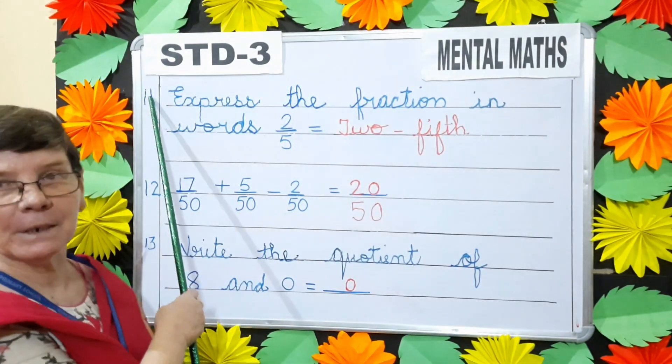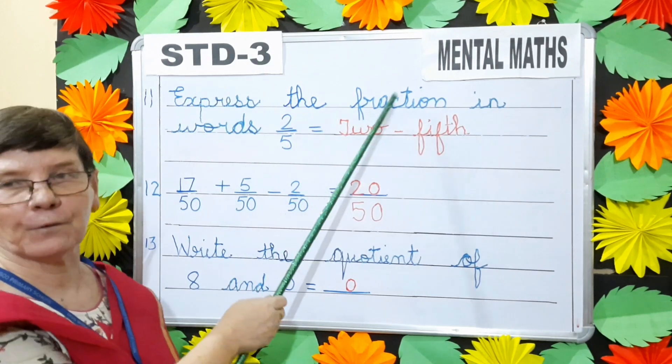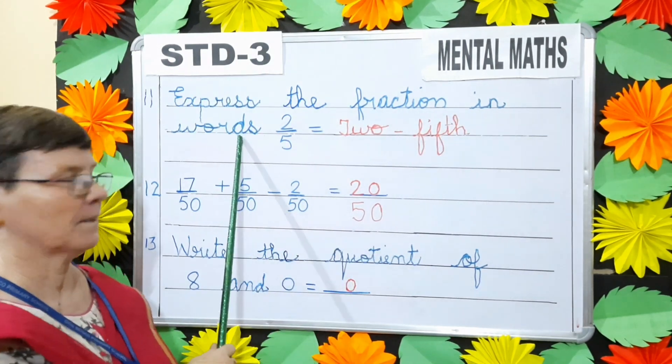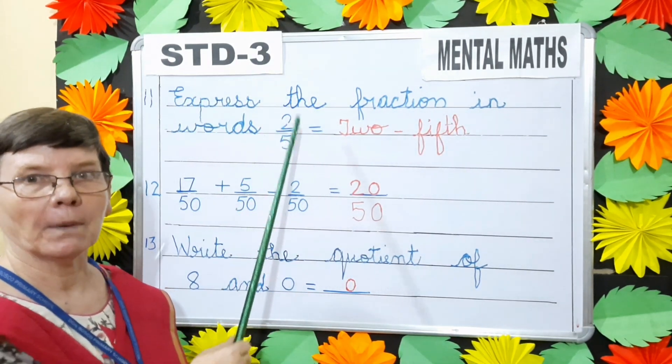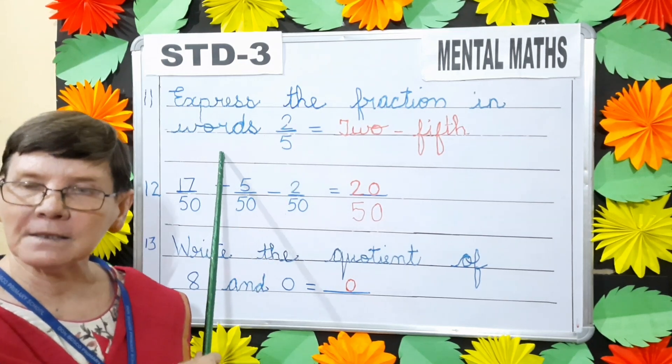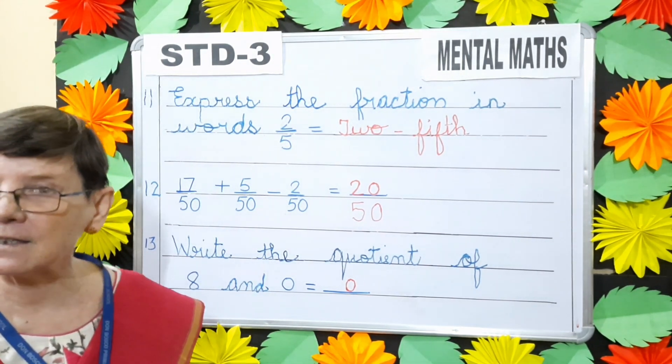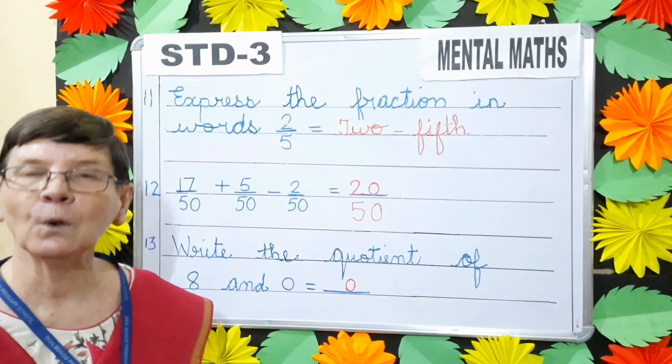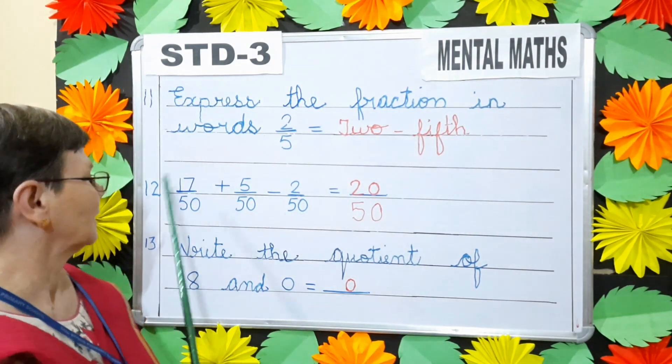Question number 11. Express the fraction in words. 2 by 5. Words means in spelling. So the answer is 2 5th.